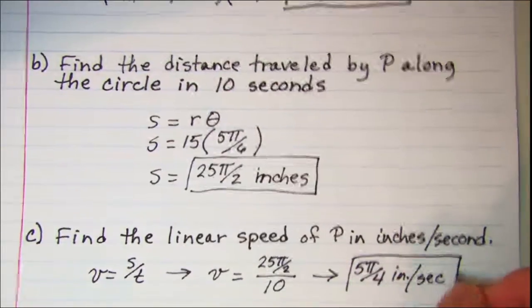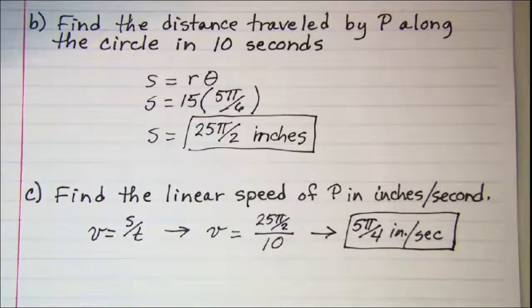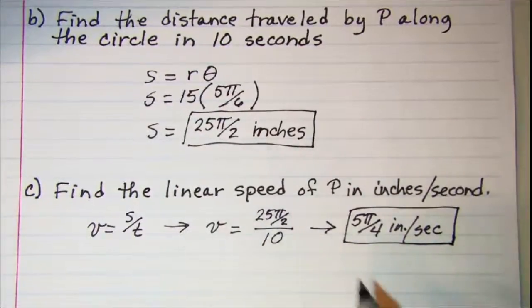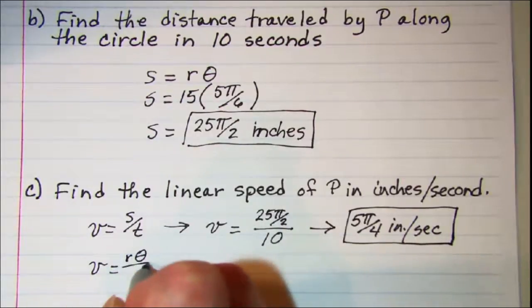I want to use the other formulas and then also unit multipliers to show you that we could do this with any of those. Another formula that we have is v equals rθ over t.